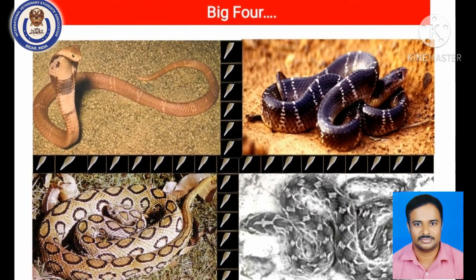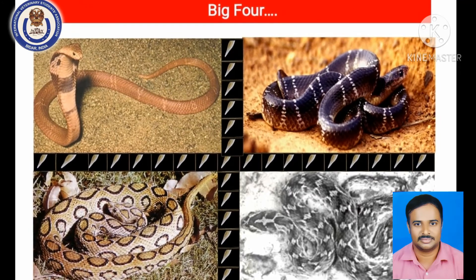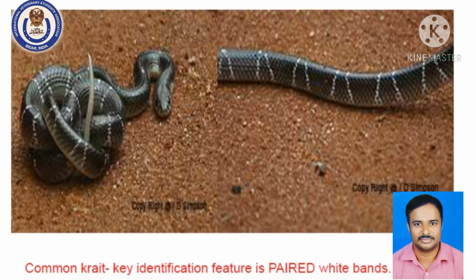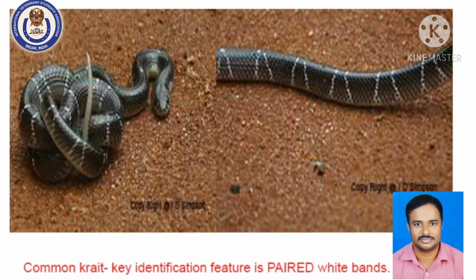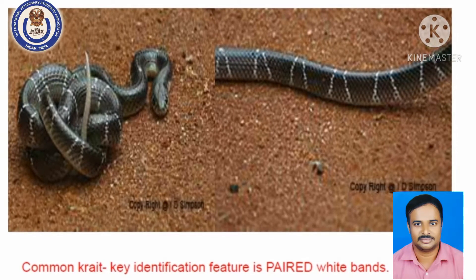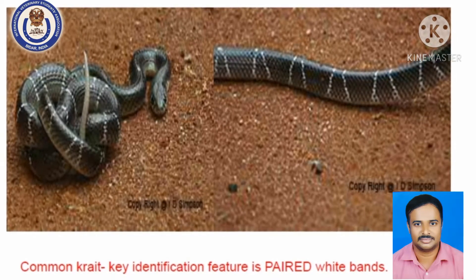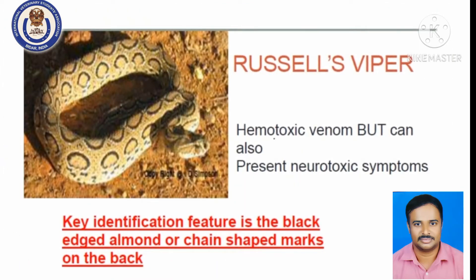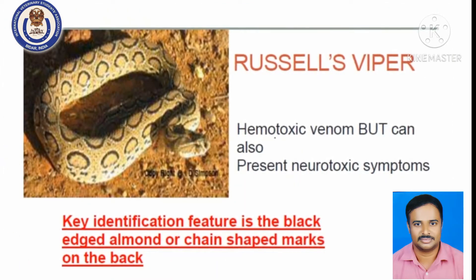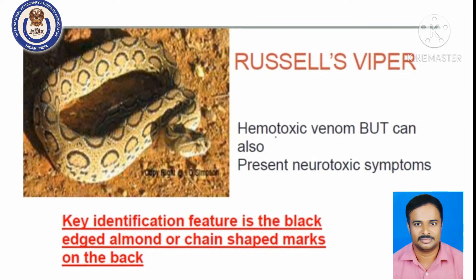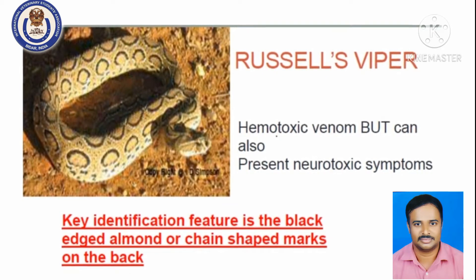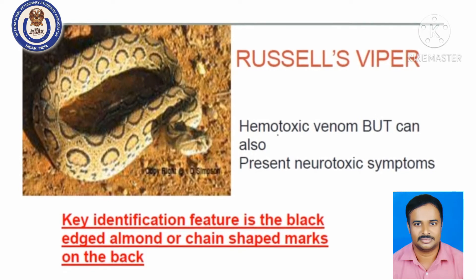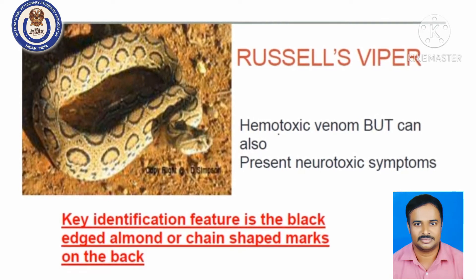Identification of snakes is very important. Naja naja, the cobra, is easily identified by its hood. The krait is identified by paired white bands on the body. Russell's viper has a key identification feature — black-edged, almond-shaped or chain-shaped marks on the back of the snake, which are clearly visible.